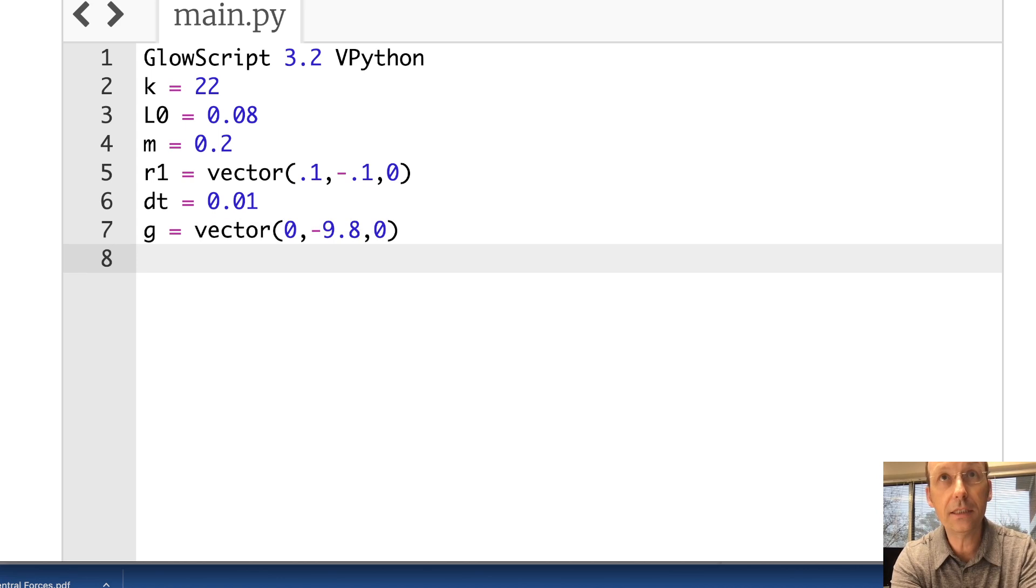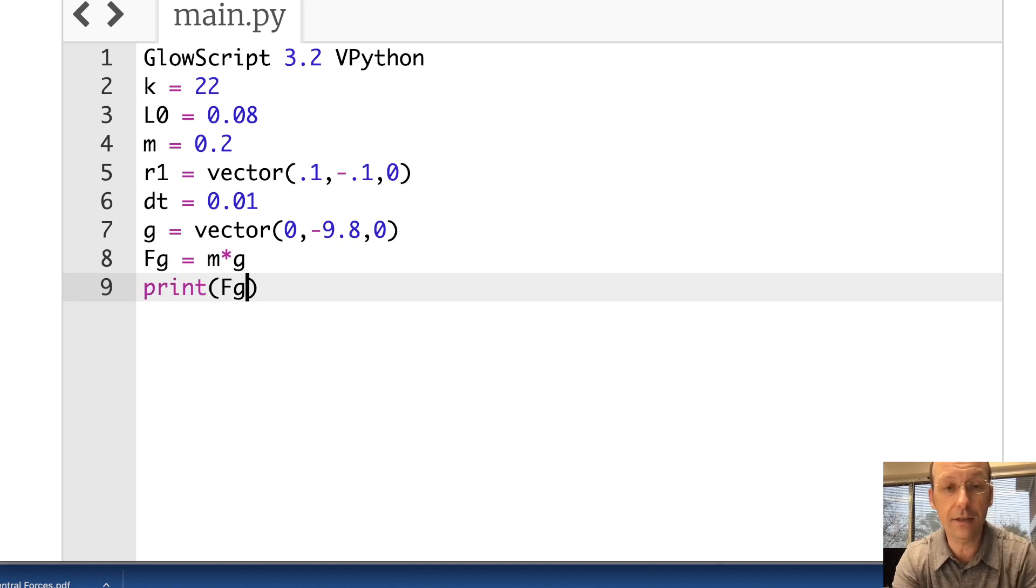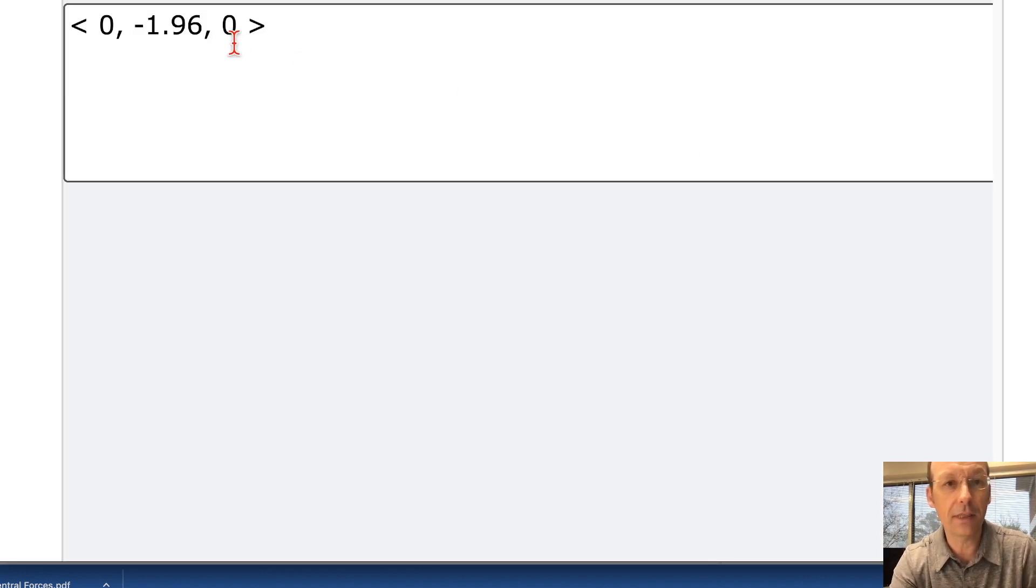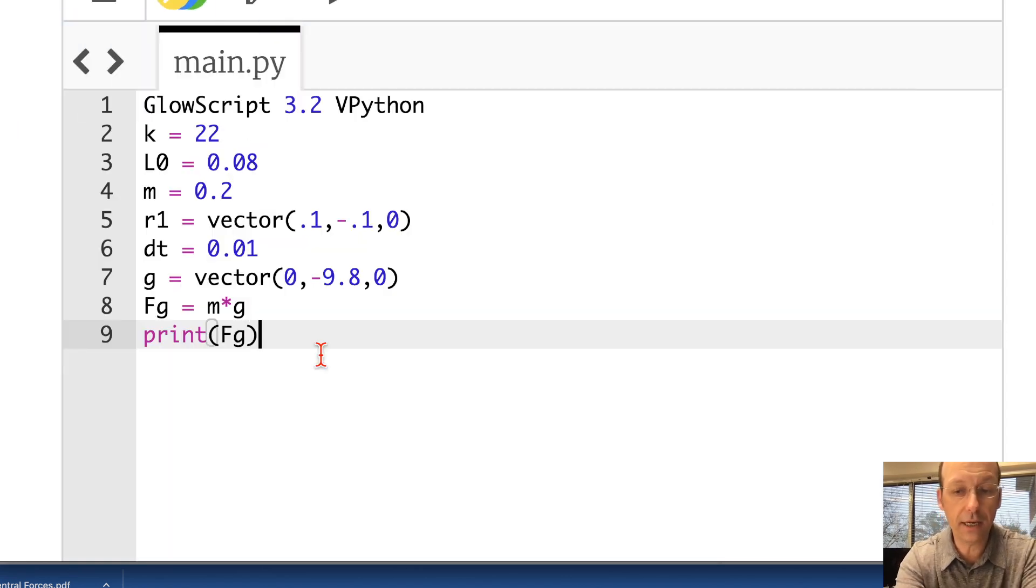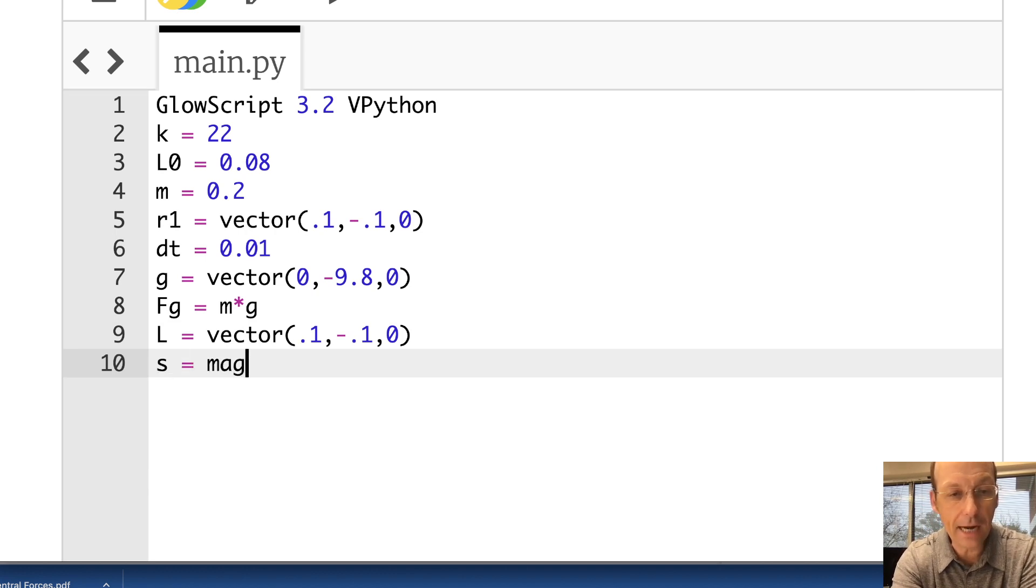Let's calculate the net force. So I'm going to break it into pieces. FG is M times G. That's all. If I print that, it did the vector operation for me, which was easy. Let's break this up for the spring force. I'm going to say S is, I need L. L is just the vector R1. So I'm going to write it out like this. 0.1, negative 0.1, zero. Now, S is going to be the magnitude of L minus L0. In Python, we can take the magnitude of a vector with this mag function. So that makes things a lot nicer.